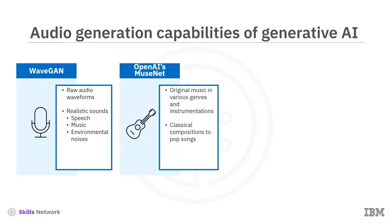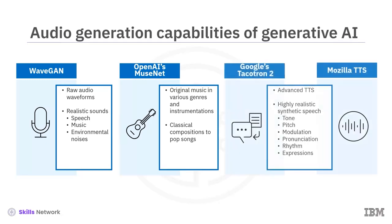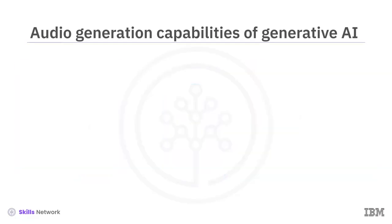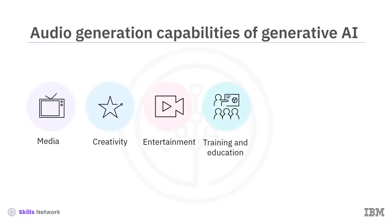MuseNet from OpenAI can combine various instruments, styles, and genres to generate novel musical compositions. Google's Tacotron 2 and Mozilla TTS use advanced TTS systems to create synthetic speech resembling human tone, pitch, modulation, pronunciation, rhythm, and expressions. Audio generated by generative models has applications in media, creativity, entertainment, training, education, gaming, virtual reality, and several other domains.